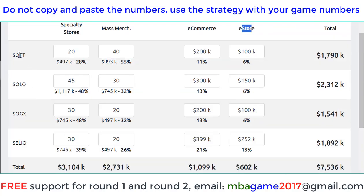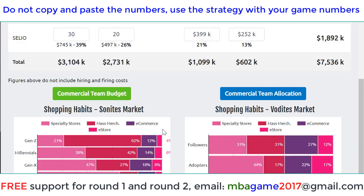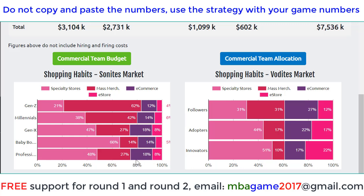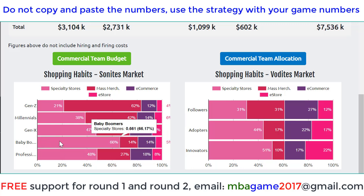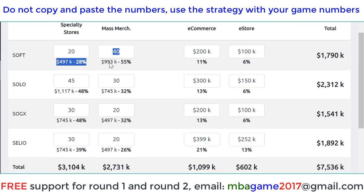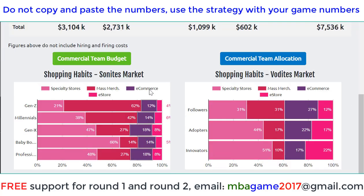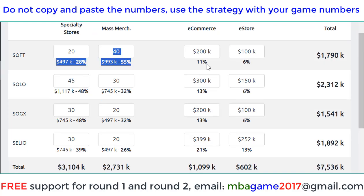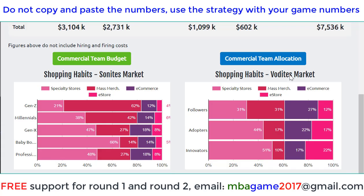For example, if you have a soft focus on baby boomers and Gen Z, we can allocate the number — say 20-40 for specialty store and mass merchandise — and then spend the rest for e-commerce and e-store.